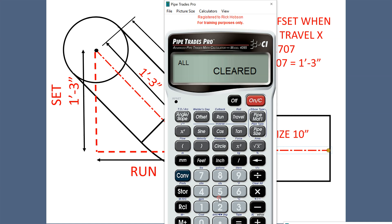We can also do it another way. We could go one foot nine inch one quarter. Tell the pipe trades pro it's a travel. Tell it we're using a 45 angle slope. Press the offset, one foot three. Press the run key, we get confirmation both sides are the same.